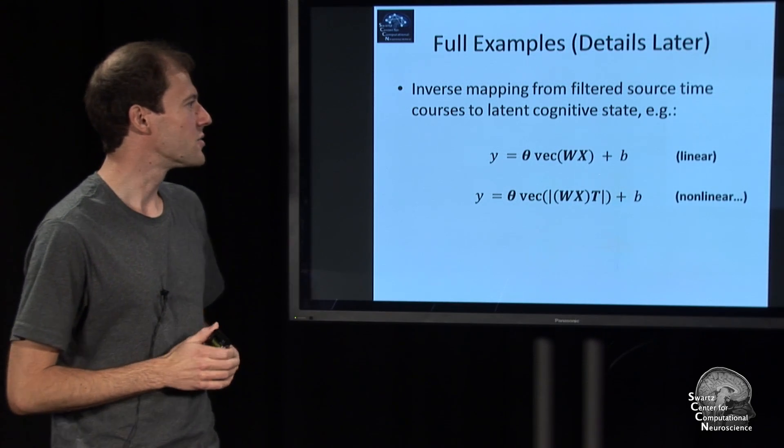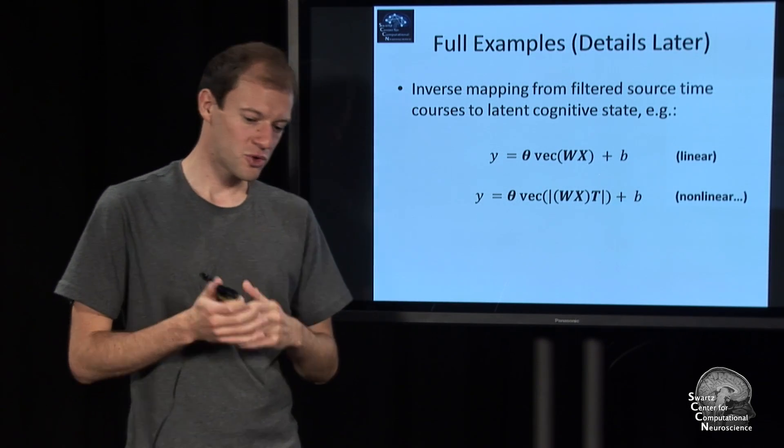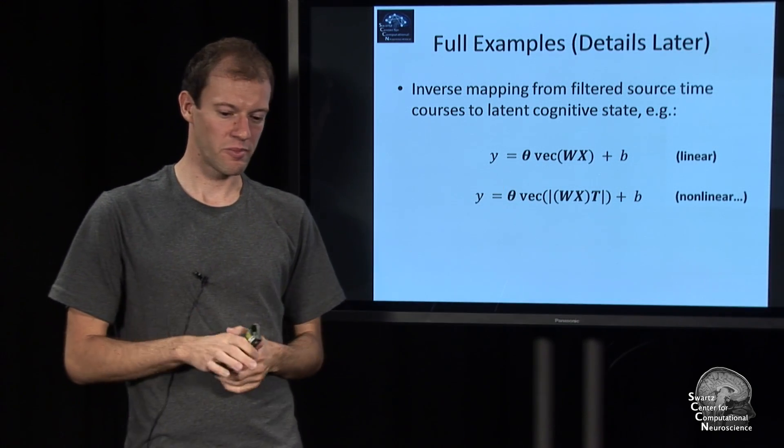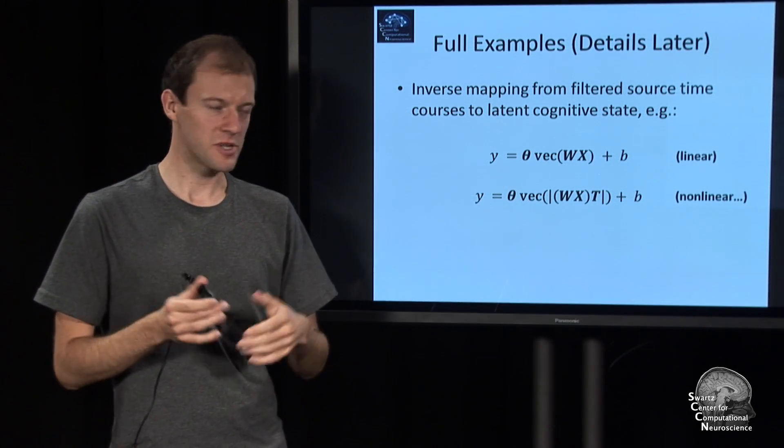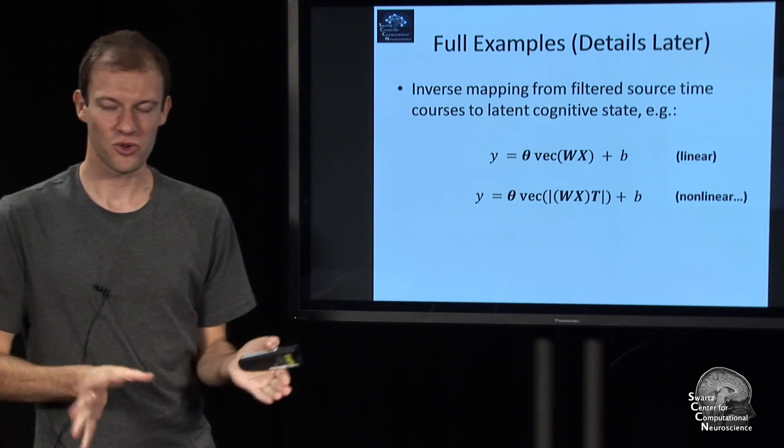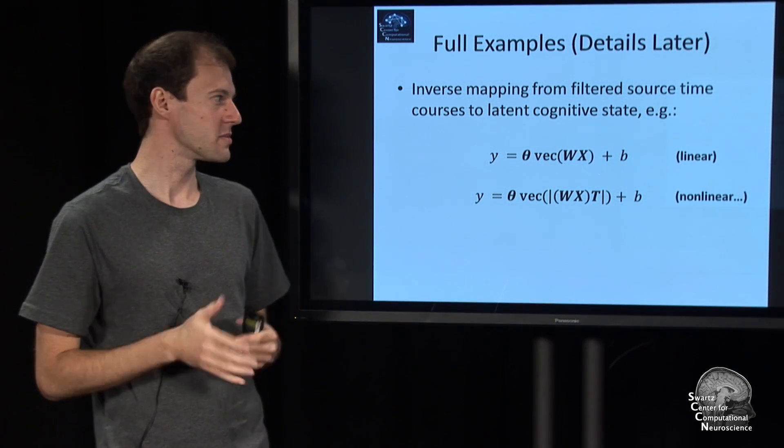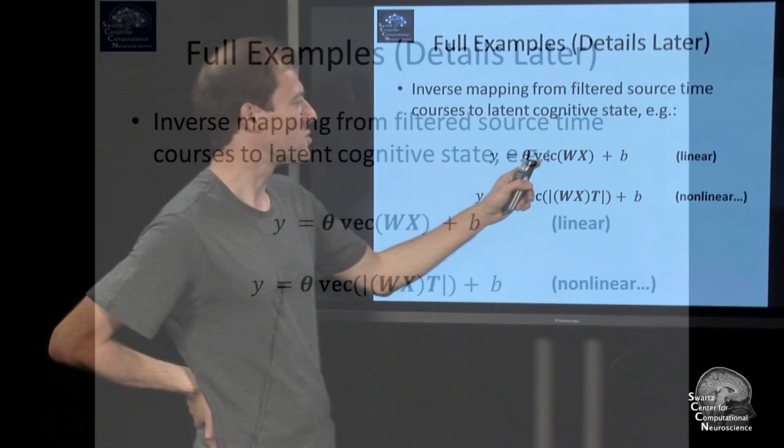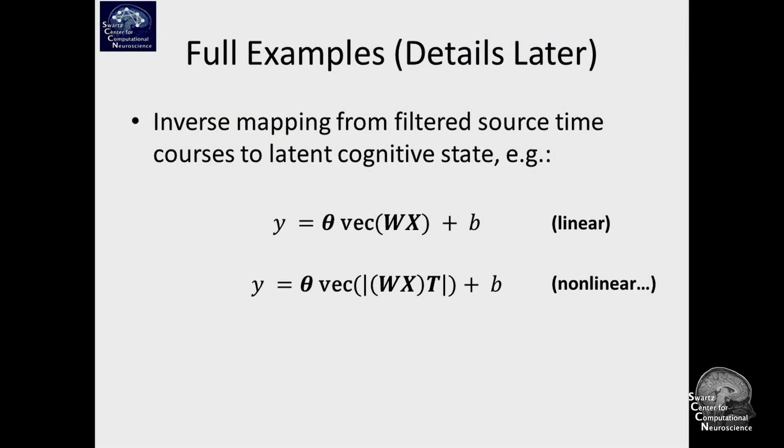You still have to deal with how the source time courses—a ripple in a bunch of neurons and their electromagnetic fields—relates to the cognitive process that you are trying to estimate or approximate, or the parameter that you are trying to infer. This gives rise to other parts of this mapping that are applied after you did that, because you want to operate on source processes.